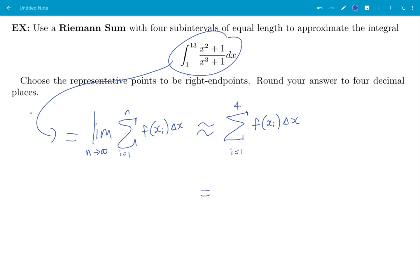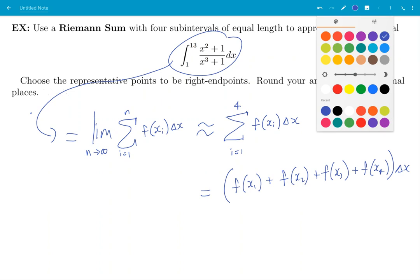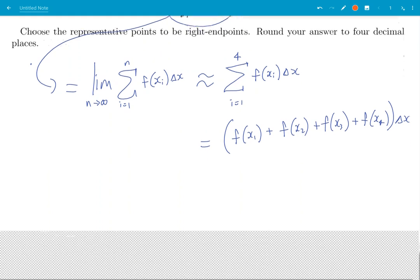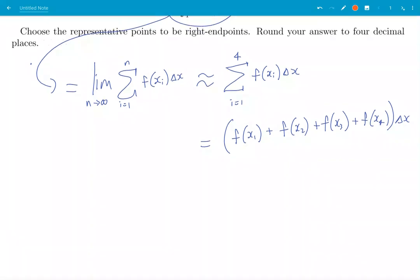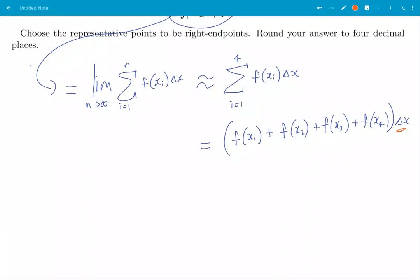What was that equal? Well that's f of x_1 plus f of x_2 plus f of x_3 plus f of x_4 times delta x. Okay, we'll take a side here to decide what is delta x and what are all these x's here.